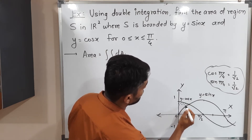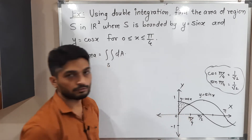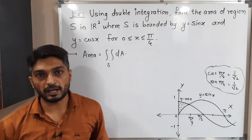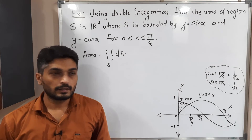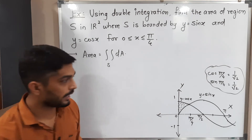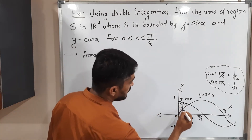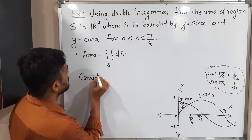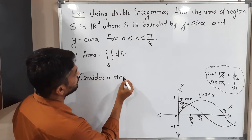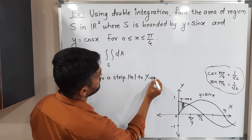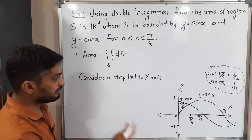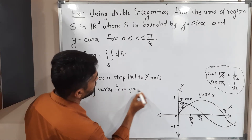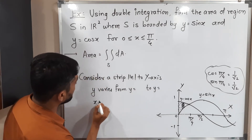This is our region of integration. We have two options: consider a strip parallel to the y-axis or parallel to the x-axis. For this part, it is better to consider a strip parallel to the y-axis. So let us draw a strip parallel to the y-axis. When we have a strip parallel to the y-axis, y varies between two curves and x varies across a range.